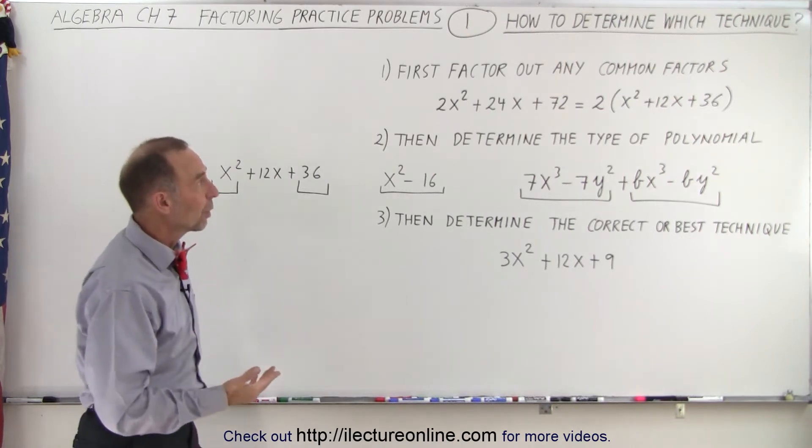So the first thing you want to do is when you have something like this, see if you can factor out any common factors. Since every one of the numerical coefficients is even, we can see that we can factor out the number 2.